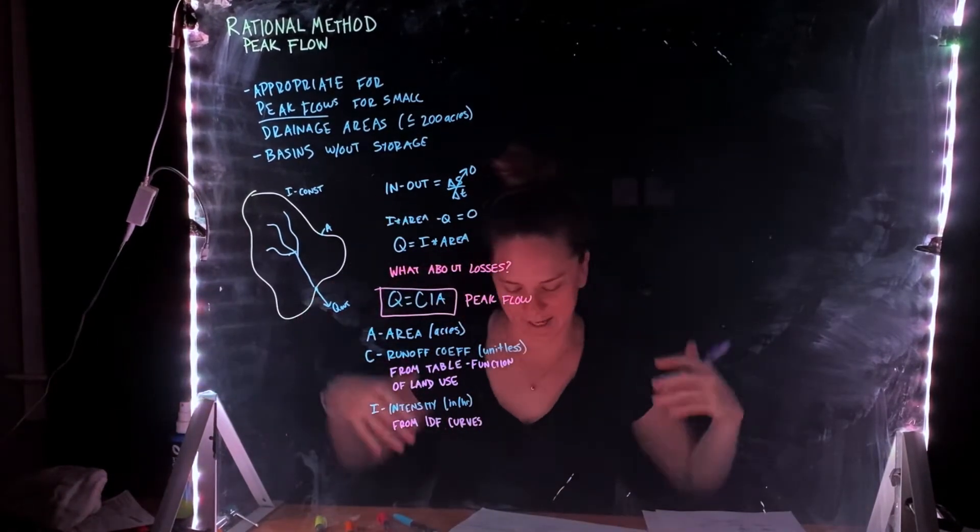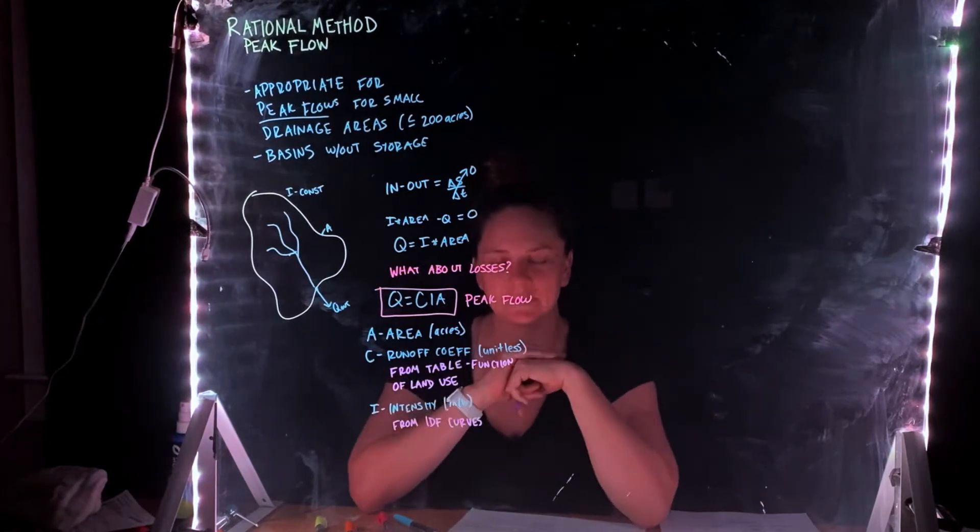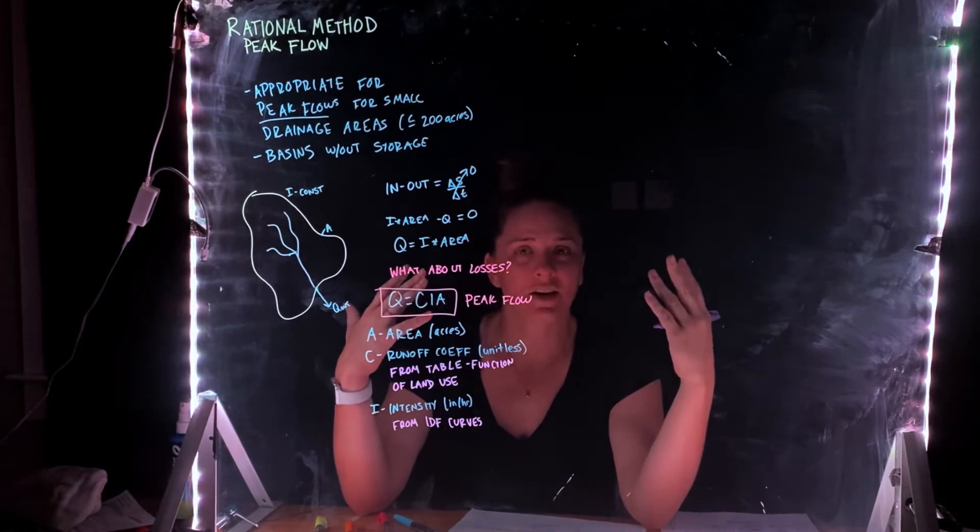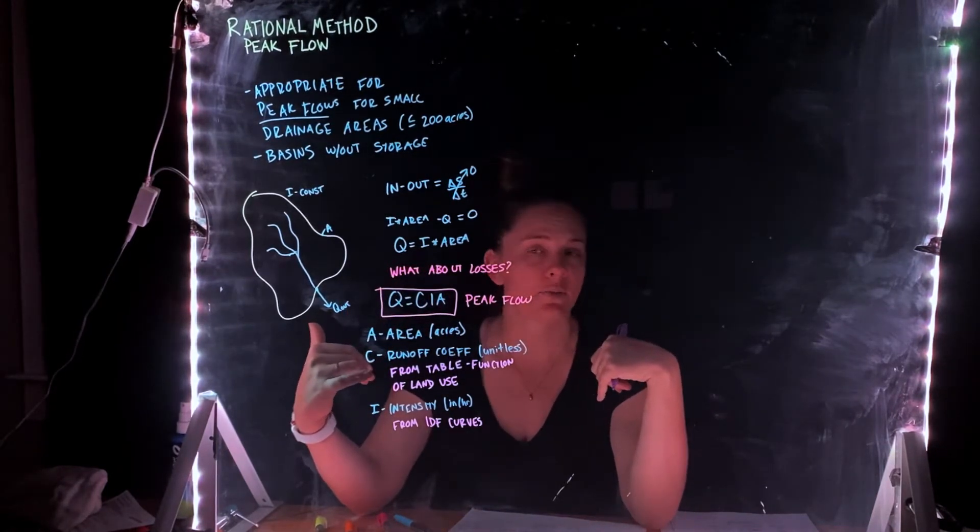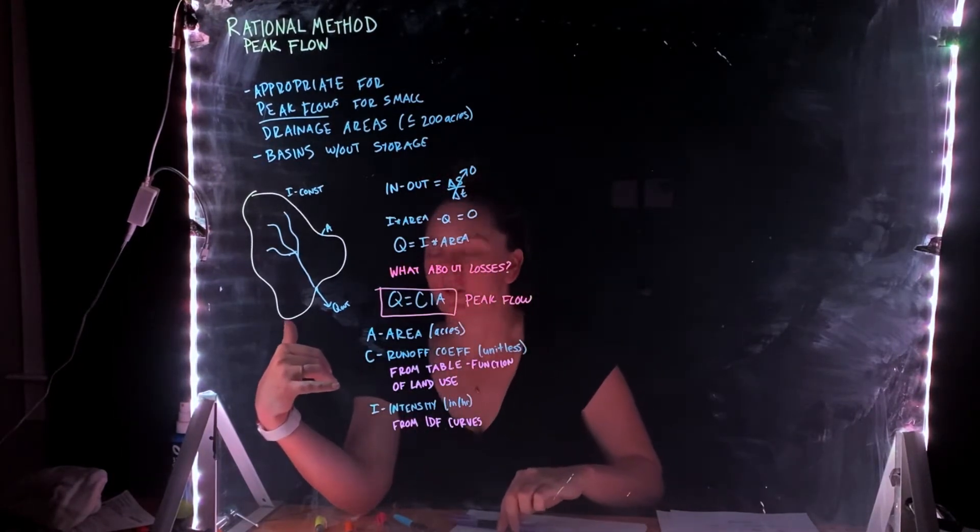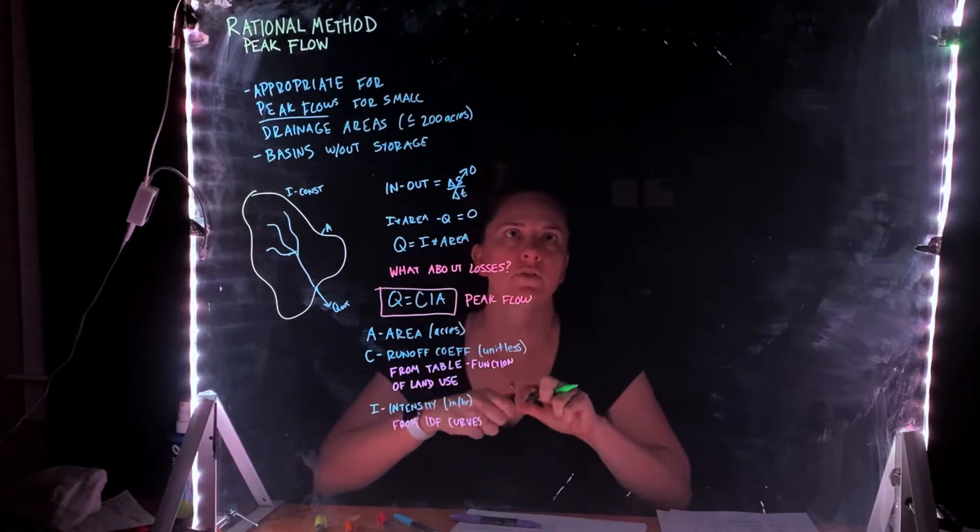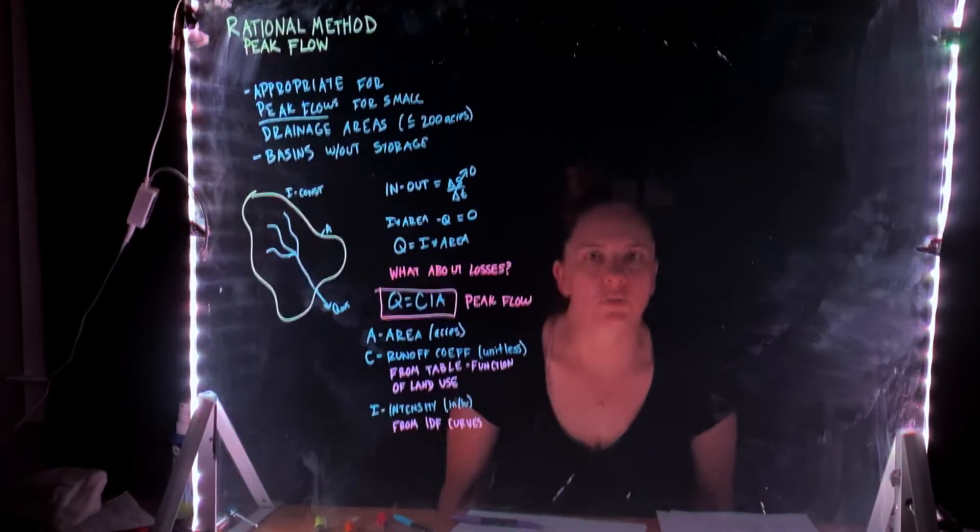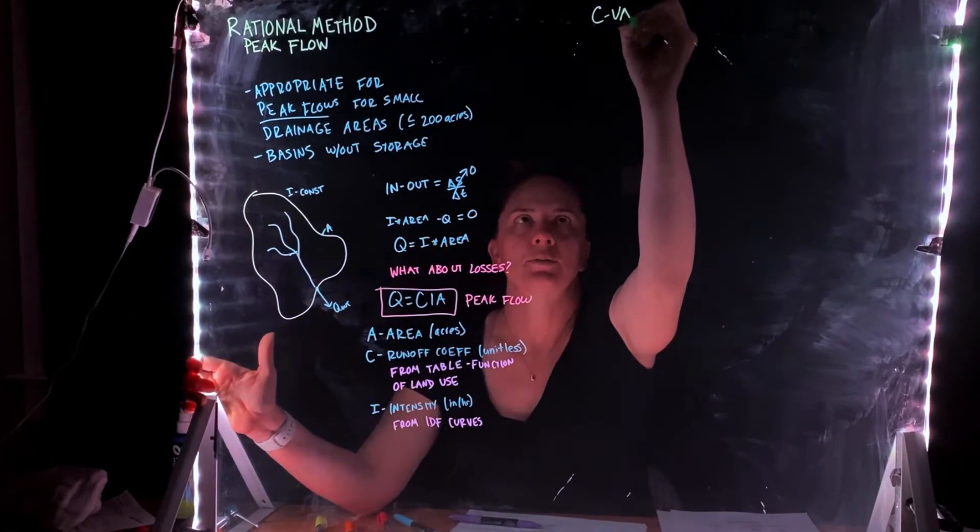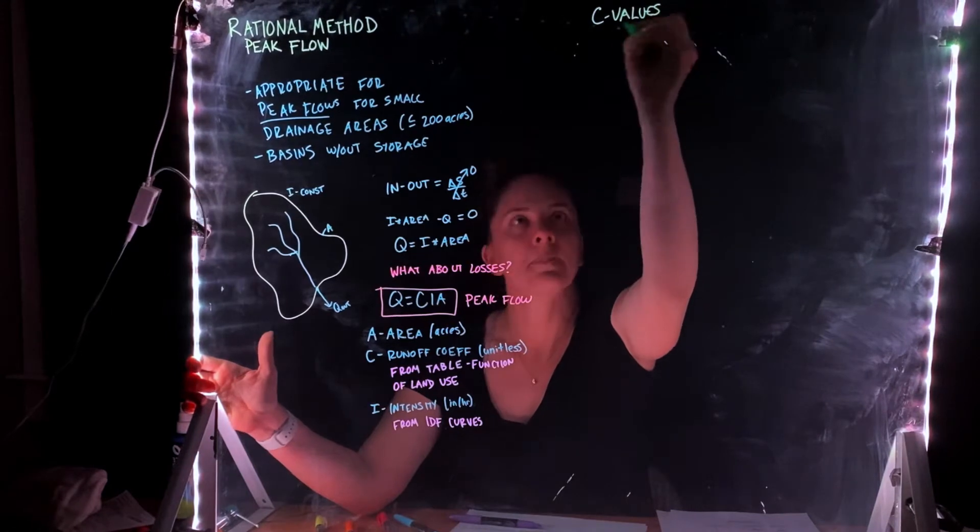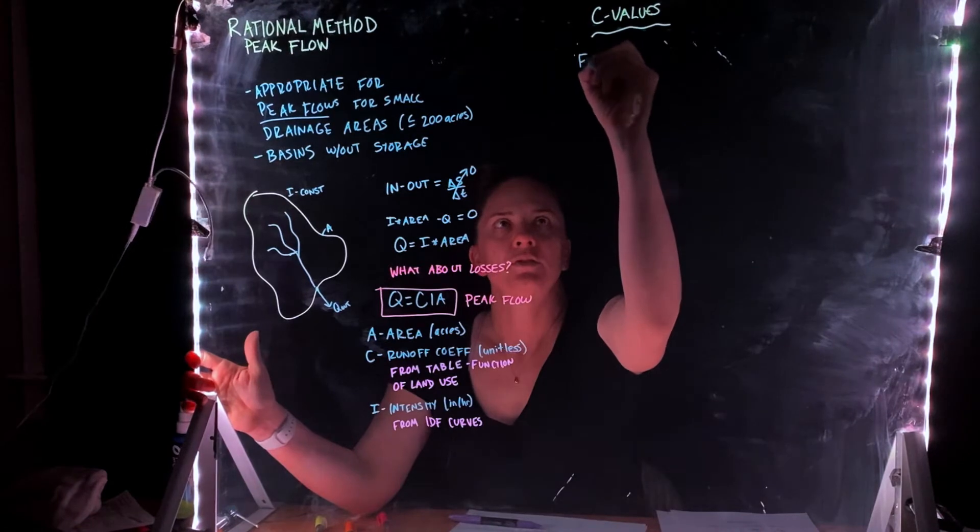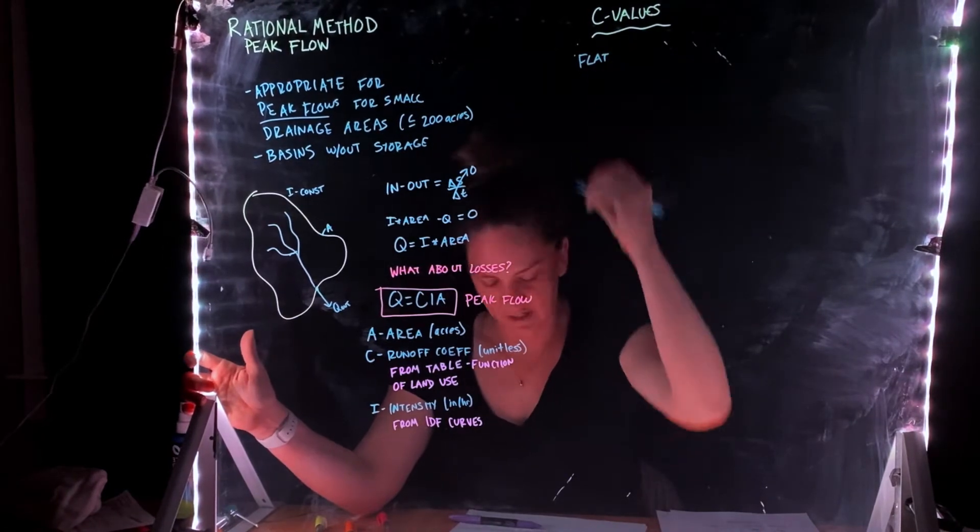Don't you love it when something comes back again in the class? So A area, pretty easy. We can just know that that's the area. So we're going to look a little more deeply here at C, the runoff coefficient, and I, the intensity. So let's start with our C values, the C values for the rational method.